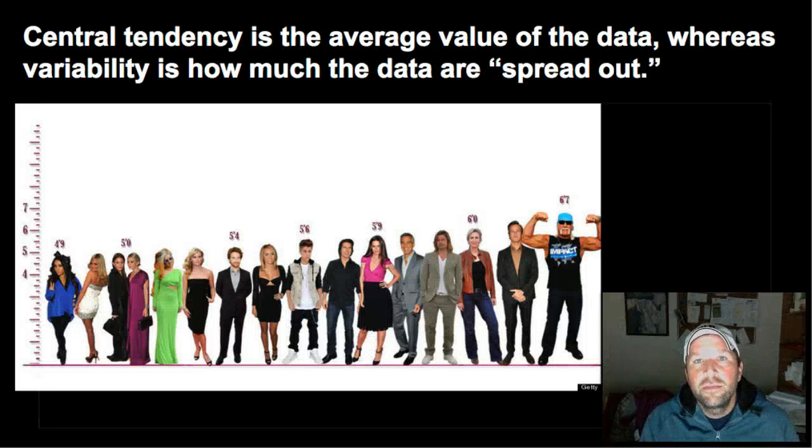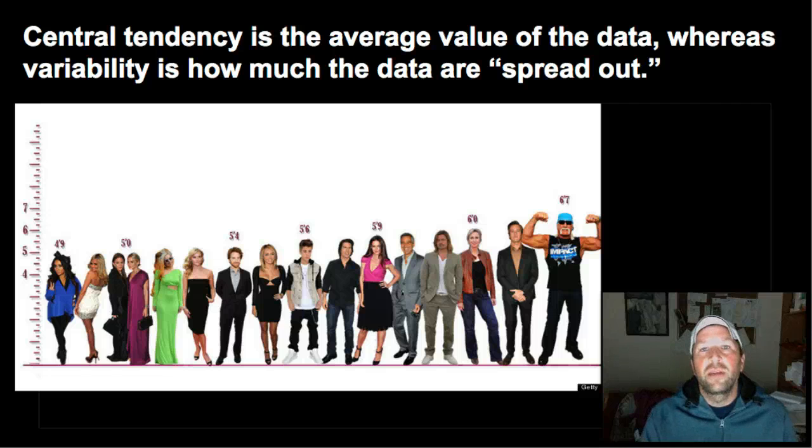Central tendency is just basically the normal or average values of a data. The most common measure of central tendency is mean, that you might be familiar with. Mean, of course, is another word for average. So oftentimes in school we get a grade based on average scores.